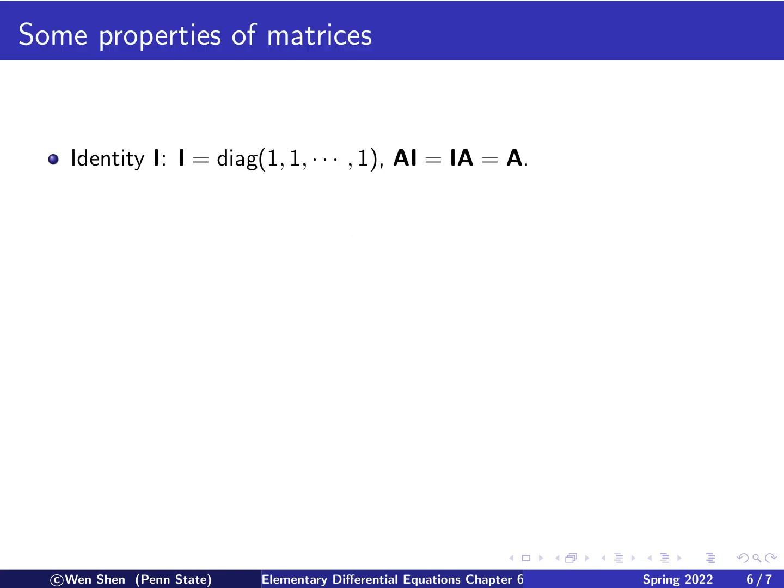Now let's review some properties of matrices. So the first property is that there is an identity matrix, capital I. And capital I is a diagonal matrix with all ones along the diagonal. And then it has the following property. If A is a square matrix with the same size, then A times identity equals identity times A equals A. So multiply with the identity on the left or on the right does not change a thing.